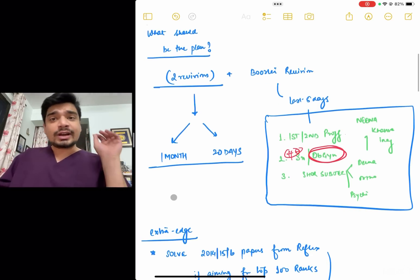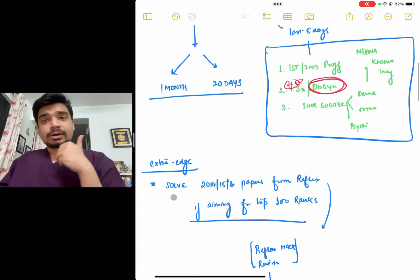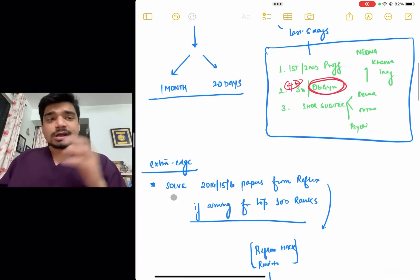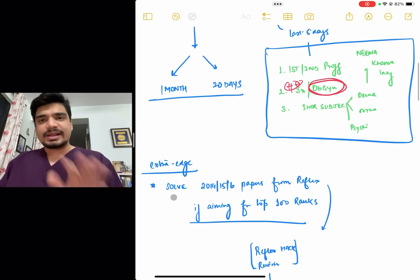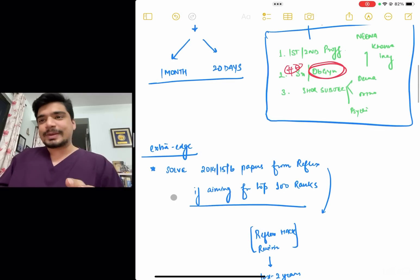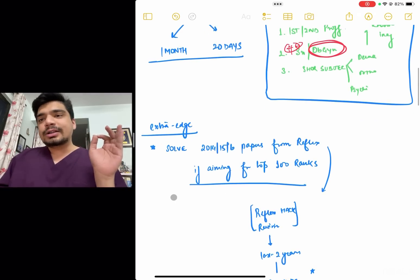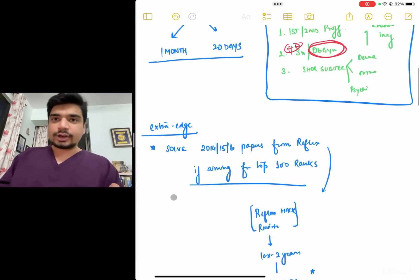For those who are looking for an extra edge to get into the top 100, I would ask you that please from Reflex, I know Reflex has some issues. Definitely, I don't deny that. But it's definitely going to be the best 600 rupees of your life that you're going to spend. Solve 2014, 15 and 16 questions from Reflex.